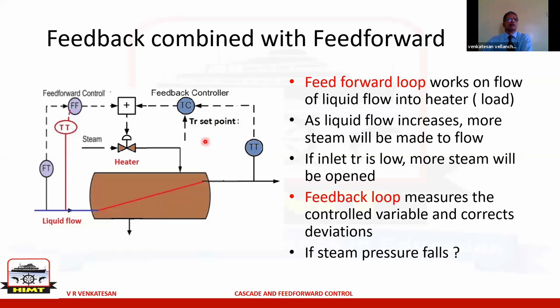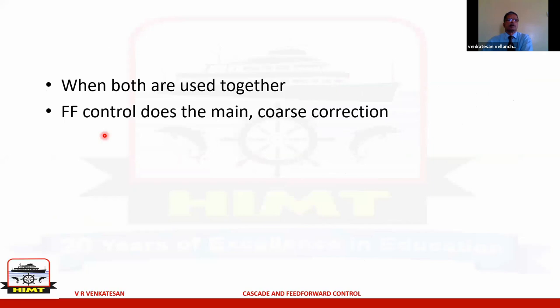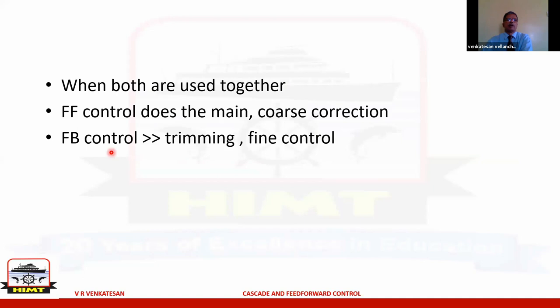Combining feed forward and feedback: the feed forward part does the main controlling, but its control is coarse — not exact. As soon as steam demand increases, feed water or firing rate increases immediately. The feedback control gives the exact final value — for example, maintaining exactly 16 bar is achieved by the feedback control. When used together, the first reaction always comes from the feed forward part, which does the bulk of the correction, while the fine adjustment is done by feedback.